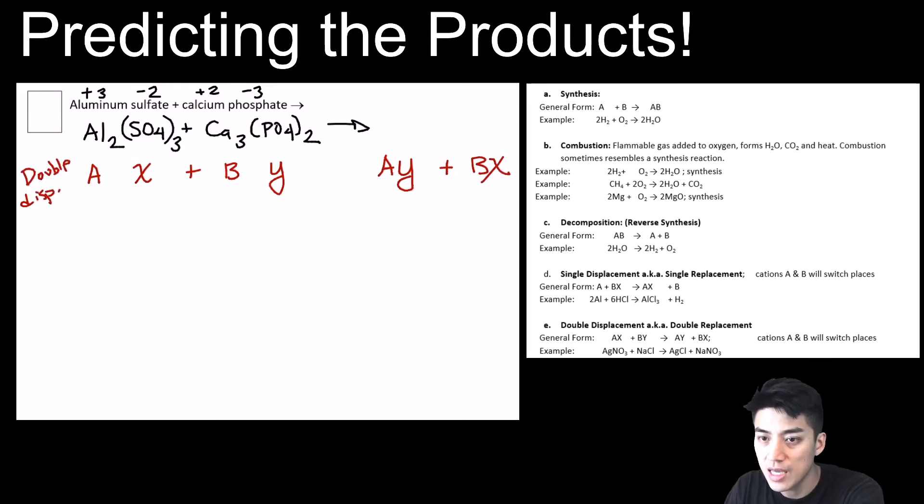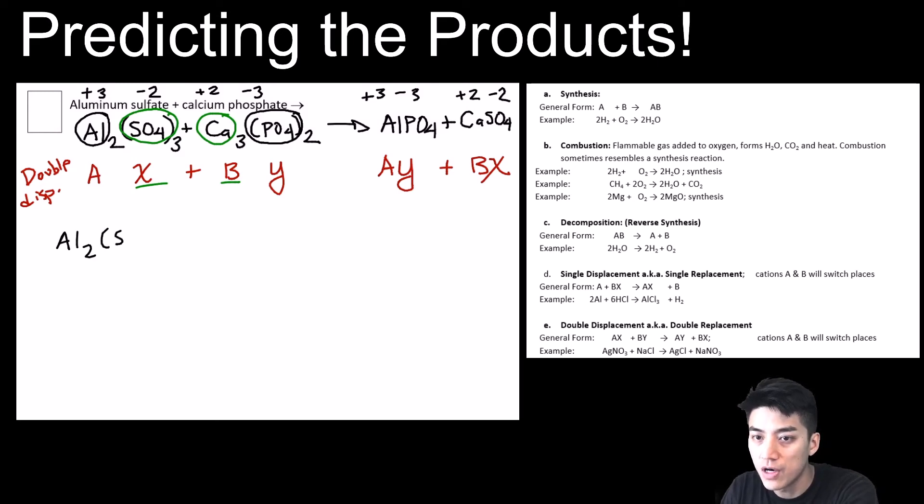Okay, double displacement because the A and the B elements will switch places with each other. And they take on like a new partner. So A will partner up with Y to form aluminum phosphate on the product side. So this is just AlPO4. And it will form a compound BX. So element B, which is the calcium, will partner up with compound X, which is sulfate, to form calcium sulfate, which is just CaSO4. Remember, the charges are 2 and 2, so they just simplify to 1. So I'm confident that this is now correct. We can move on and try to balance the equation.